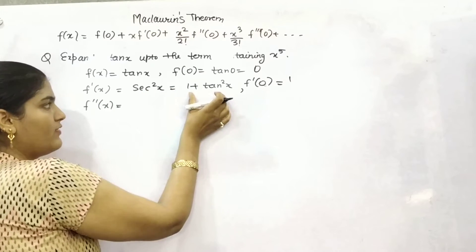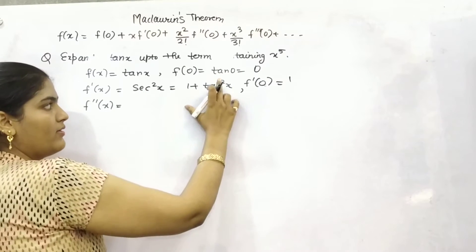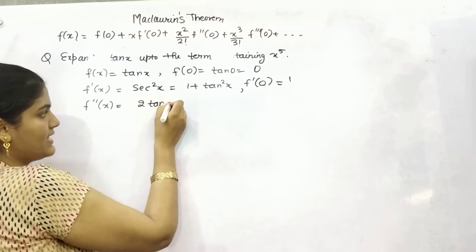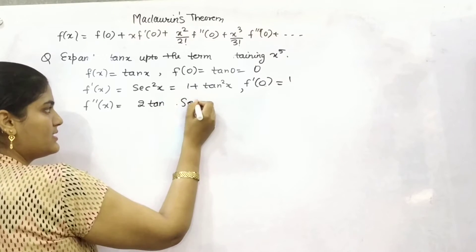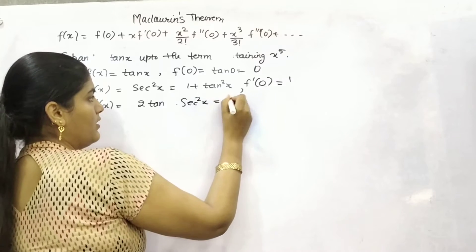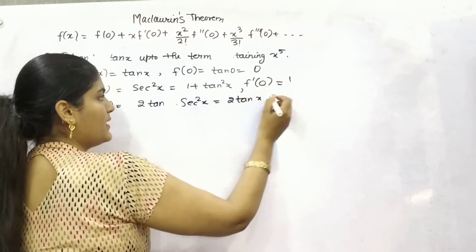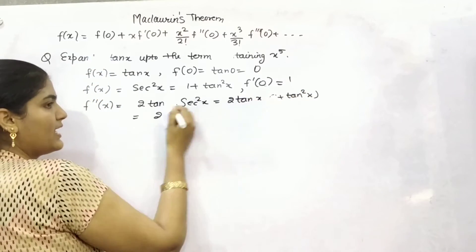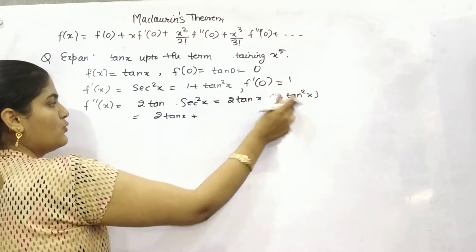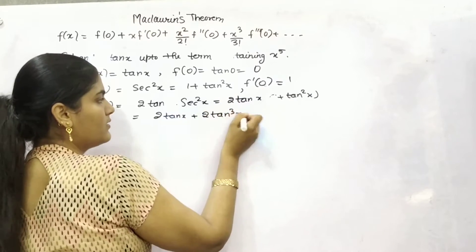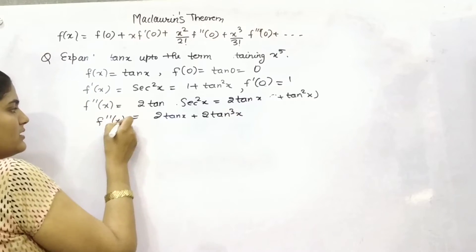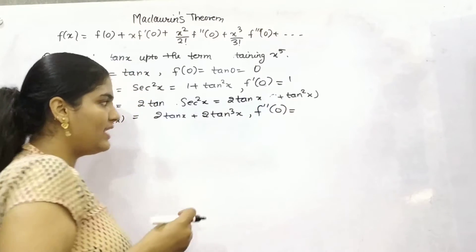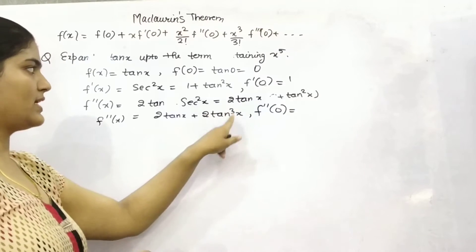For the double derivative, the derivative of 1 is 0. Now for tan²(x), applying the chain rule: the derivative of x² is 2x, where x here is tan(x), and the derivative of tan(x) is sec²(x). So you can substitute 1 plus tan²(x) for sec²(x), giving 2·tan(x) plus 2·tan³(x). Putting x as 0, tan(0) is 0, so the second derivative at 0 is 0.